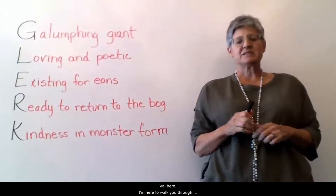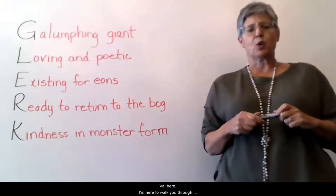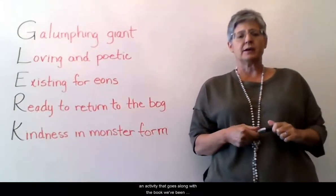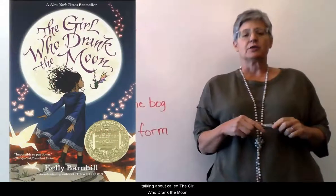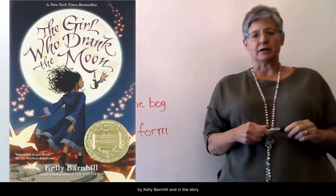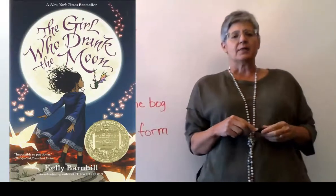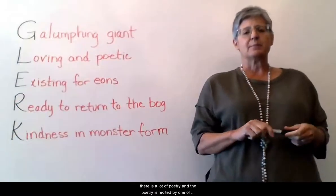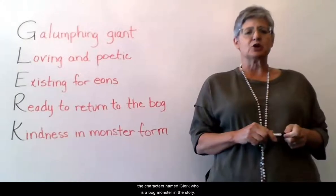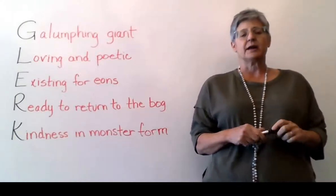Hi everybody, Miss Val here. I'm here to walk you through an activity that goes along with the book we've been talking about called The Girl Who Drank the Moon by Kelly Barnhill. In this story there is a lot of poetry, and the poetry is recited by one of the characters named Glurk, who is a bog monster in the story.